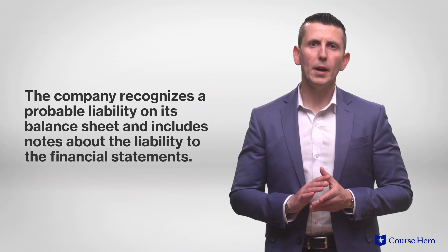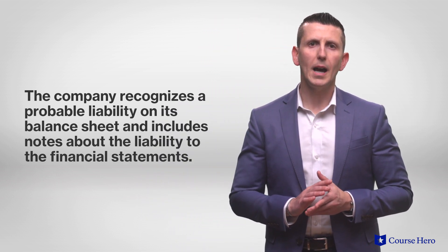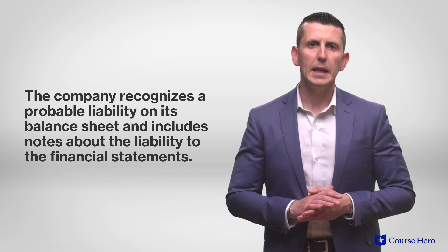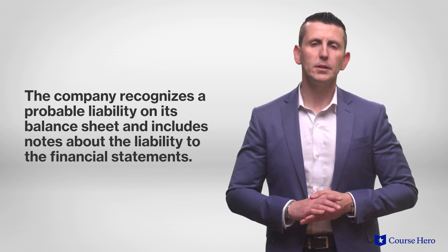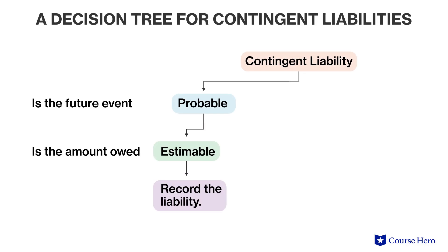When the contingent liability is probable, the company recognizes the liability on its balance sheet and includes notes about the liability to the financial statements. These probable liabilities are later recognized as expenses when incurred.